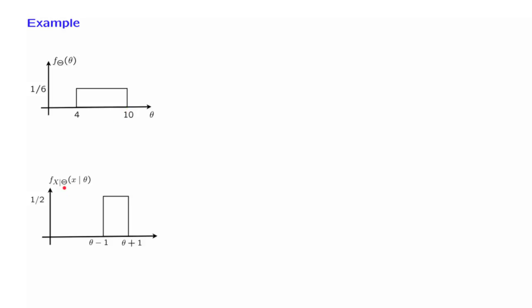This is the conditional distribution of x given theta. For any given value of theta, x is going to take values between theta minus 1 and theta plus 1, and the conditional distribution is uniform on that range.